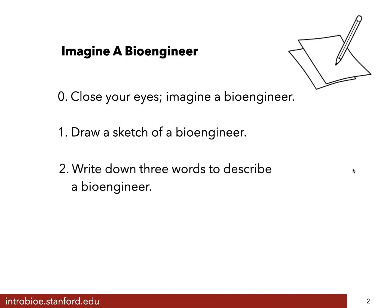When you think about what you've imagined and what you've drawn, just write down three words — three different words that describe the bioengineer you imagined. Characteristics, anything about them that comes to your mind.